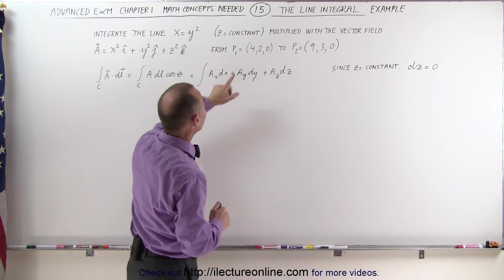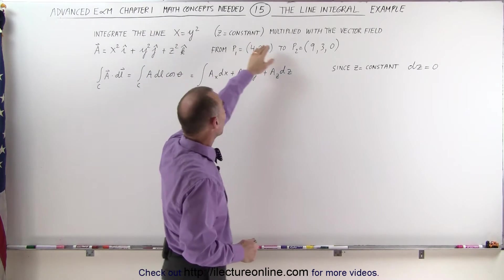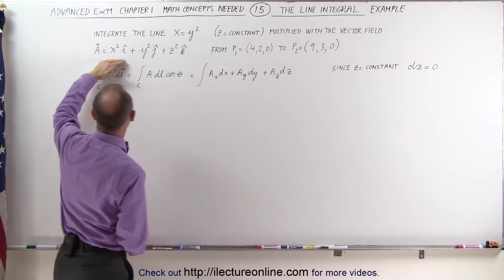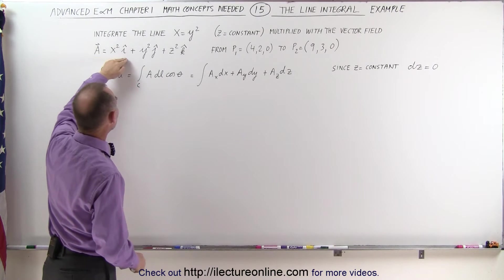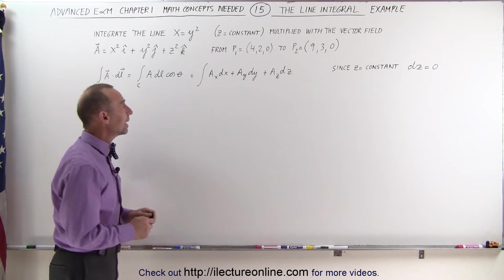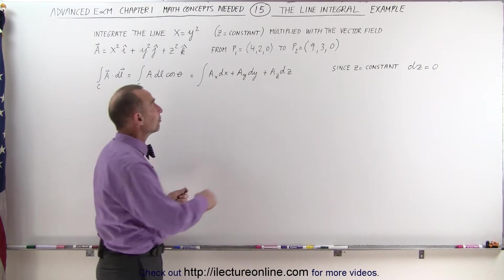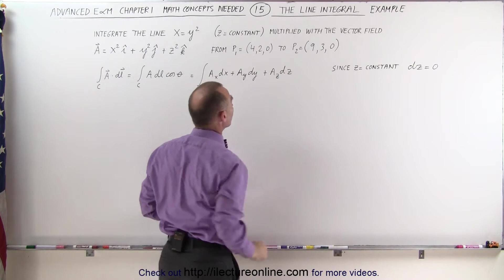We're going to multiply this line with the vector field defined as follows: A is x squared in the i-direction, y squared in the j-direction, plus z squared in the k-direction. And we're integrating it from point 1 to point 2.